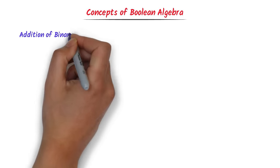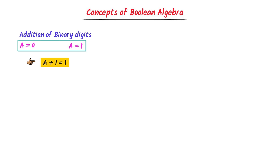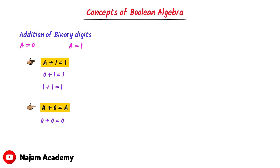Let me teach you addition of binary digits. Let a equal 0 or a equal 1. First, a plus 1 is equal to 1: since a is 0 or 1, we get 0 plus 1 equals 1 or 1 plus 1 equals 1. Second, a plus 0 is equal to a: we get 0 plus 0 equals 0 or 1 plus 0 equals 1.